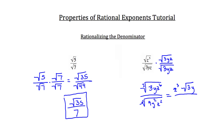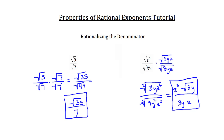On top, z to the sixth comes out as z cubed. On the bottom, the square root of 9 is 3, the square root of y squared is just y, and the square root of z squared is just z, because for every two y's or two z's you can pull one out from underneath the radical. This one was a bit longer because we had more work to do, but we were able to rationalize the denominator and get rid of the square root.